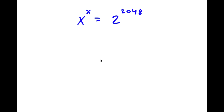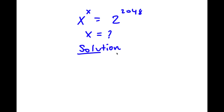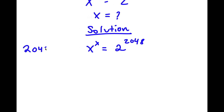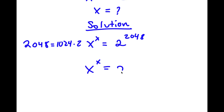Welcome back to Clicking Dynamics. In today's video, I'm going to be teaching you how to solve this exponential equation: x to the power of x is equal to 2 to the power of 2048. I obviously want to find the value of x here. I start with x to the power of x equals 2 to the power of 2048. Now, 2048 is the same thing as 1024 times 2.